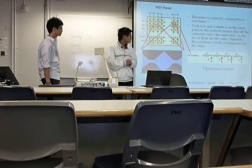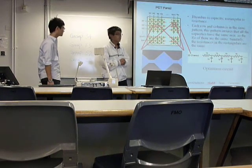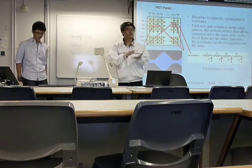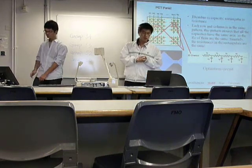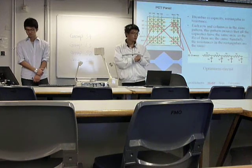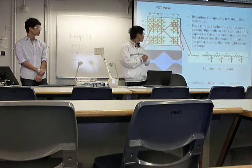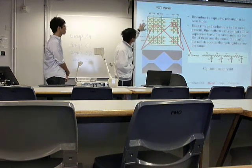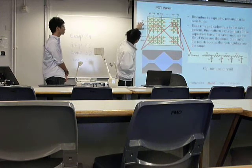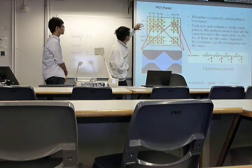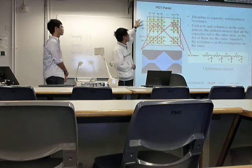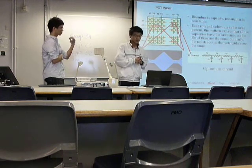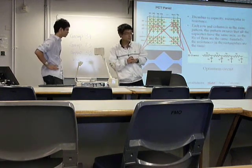Now let's look at the touch screen itself. The touch screen has a lot of layers. One of the most important layers is called the PCB panel. This PCB panel consists of some rows and columns, and each row and column follows the same pattern.